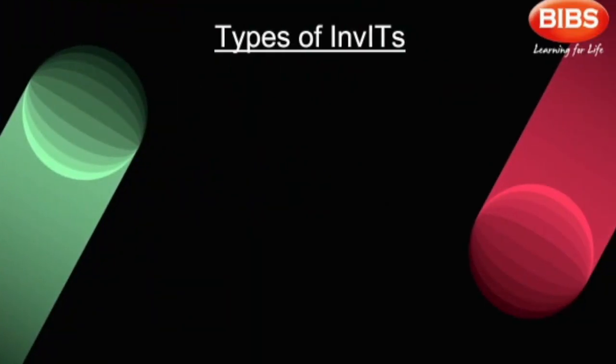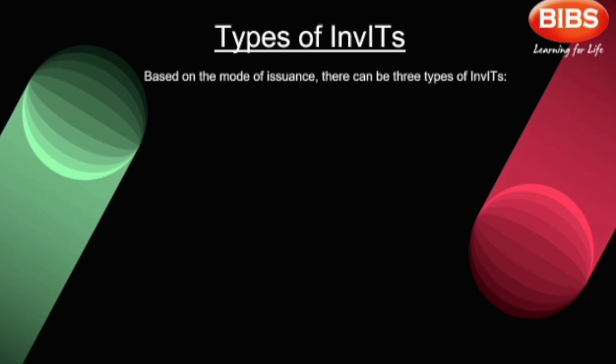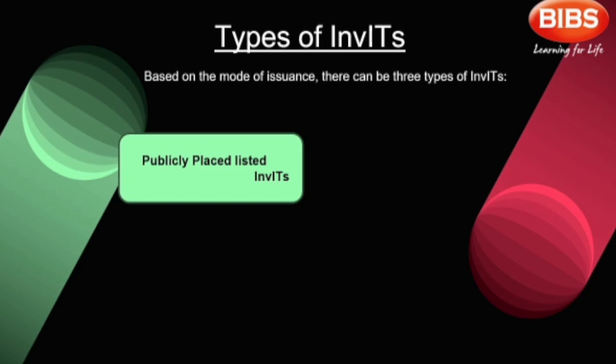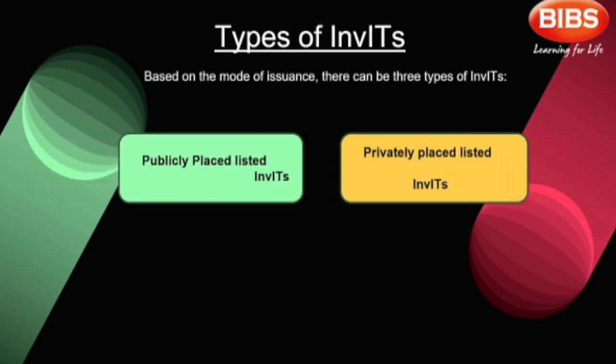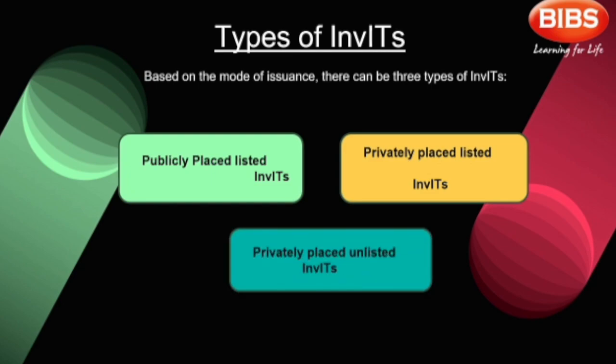There are three types of InvITs based on the number of investors and the amount to be invested. First, publicly offered listed InvITs, which are listed on the stock exchange and actively traded — the minimum number of investors for an IPO launch is 20. Second, privately placed listed InvITs, which consist of a minimum of 5 to a maximum of 1000 investors, with an investment amount from Rs 1 crore to 25 crore and a trading lot of Rs 1 crore to 2 crore. Third, privately placed unlisted InvITs, where there should be 1000 investors and the minimum investment should be Rs 1 crore.